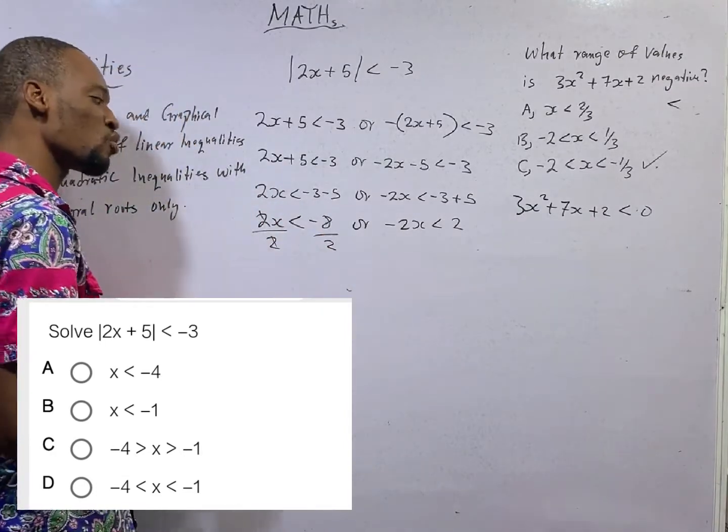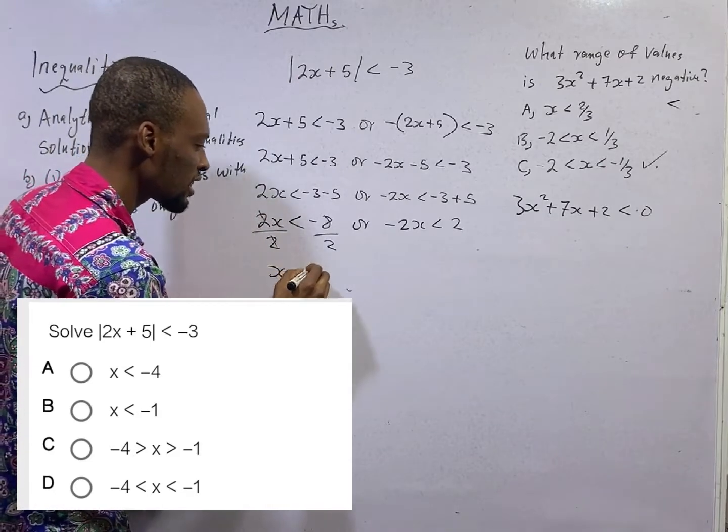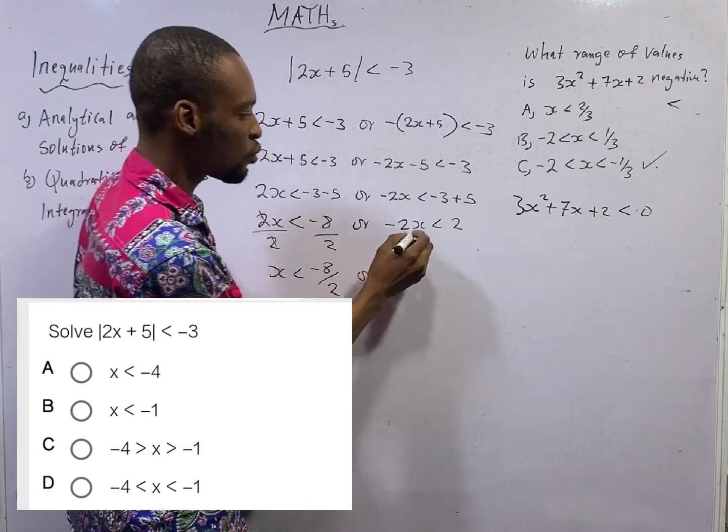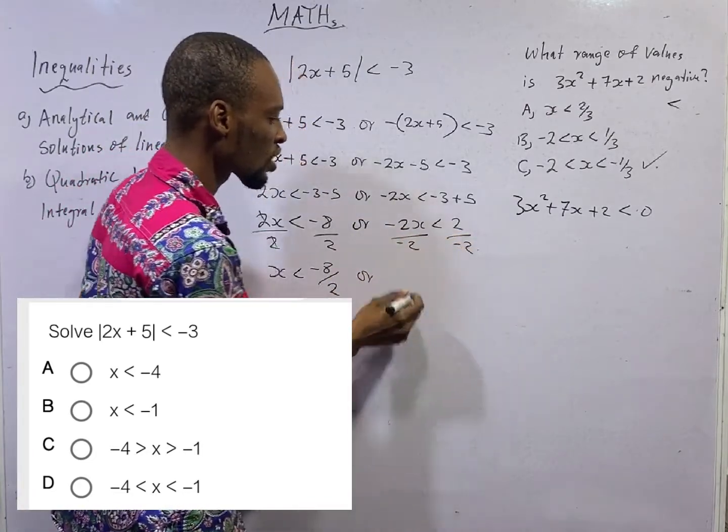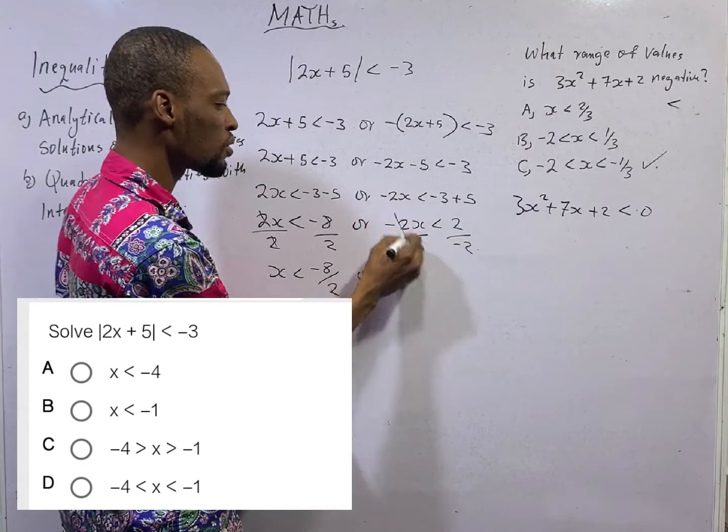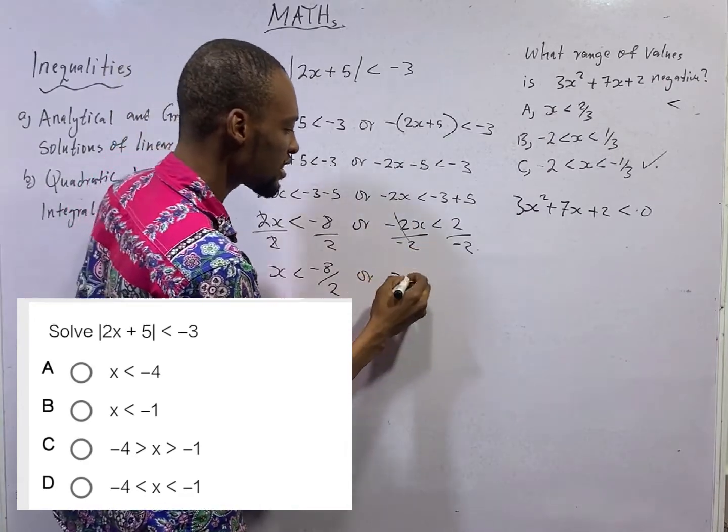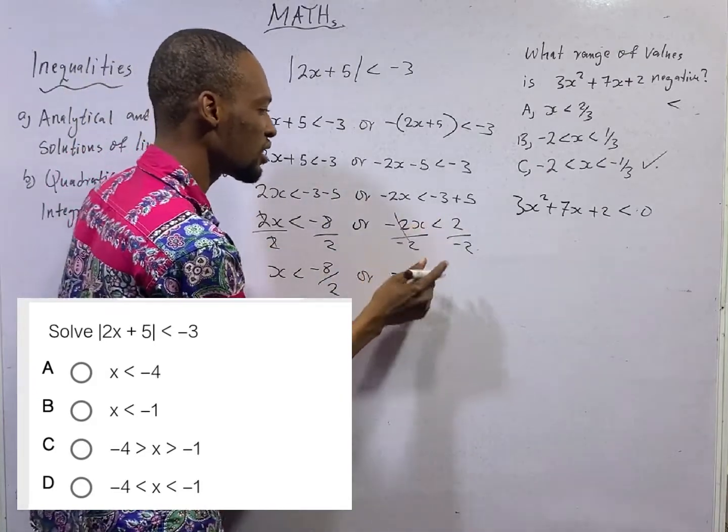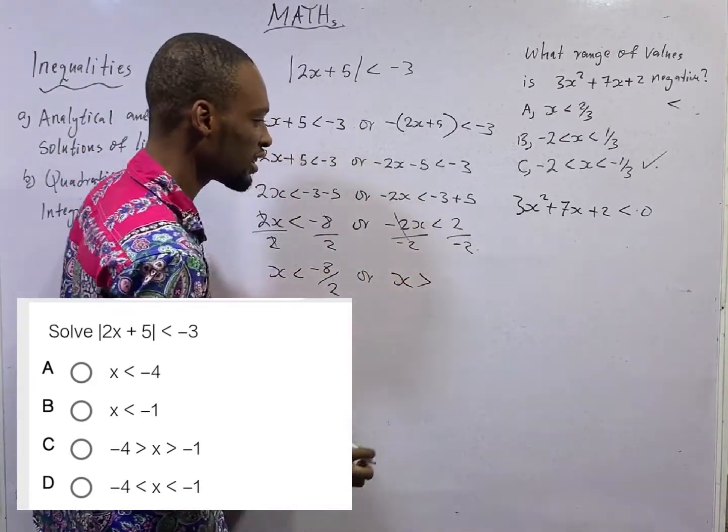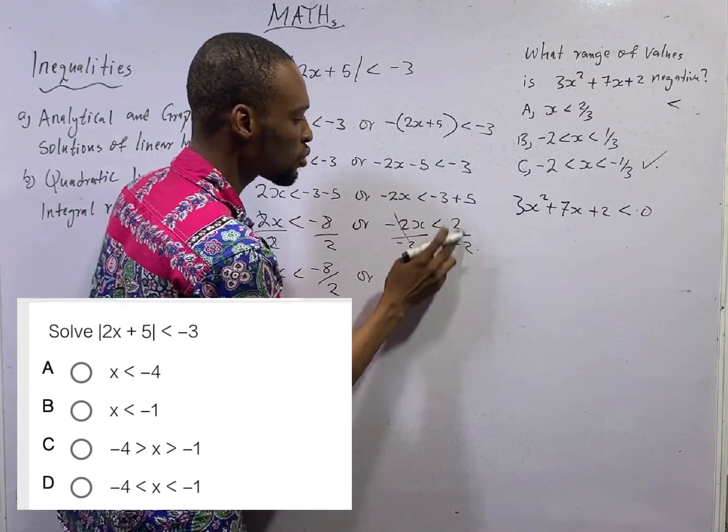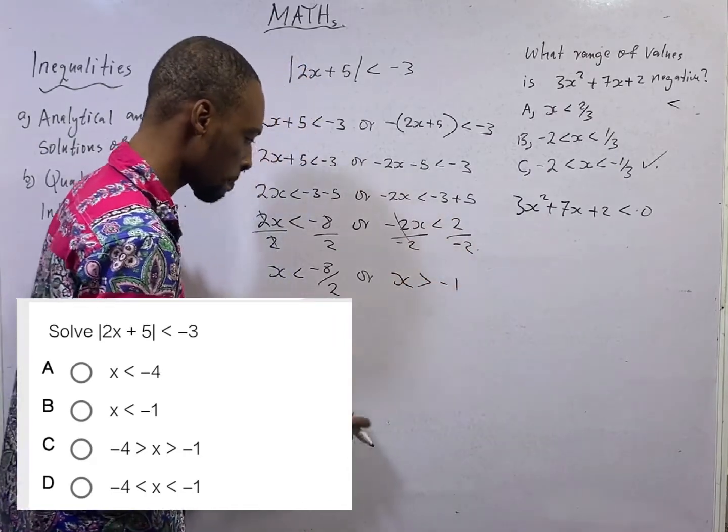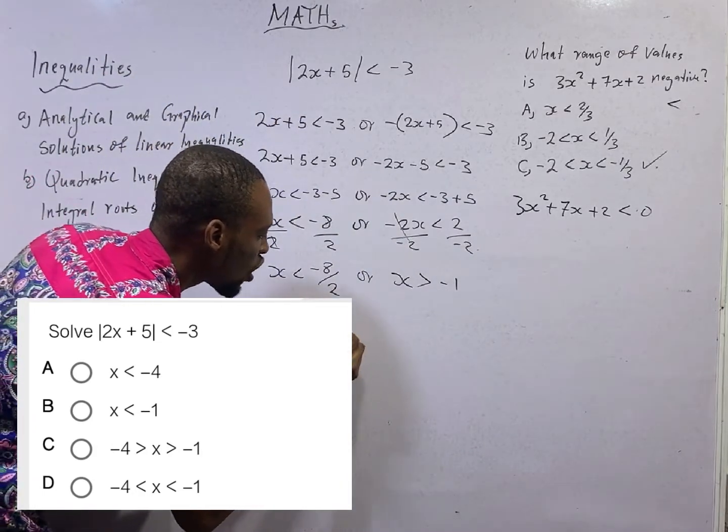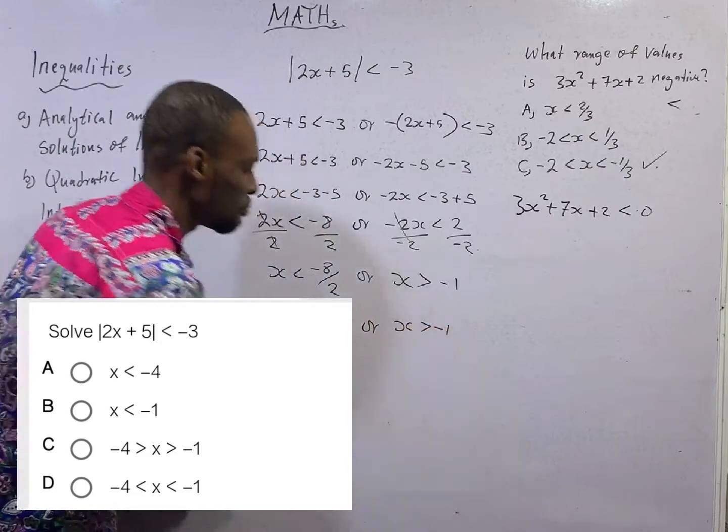Divide both sides by 2. 2 divided by 2 is 1. So s becomes lesser than minus 8 over 2. Or here, we divide both sides by minus 2. Minus 2 divided by minus 2 is 1. Since we are dividing both sides by a negative number, this sign will change. Instead of lesser than, it becomes greater than. Minus 2 divided by 2 divided by minus 2 gives you minus 1. So here becomes s is lesser than minus 4. Or s is greater than minus 1.